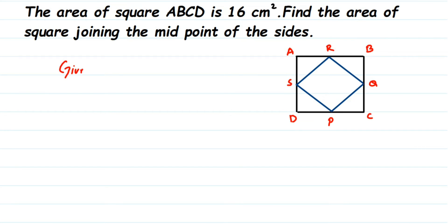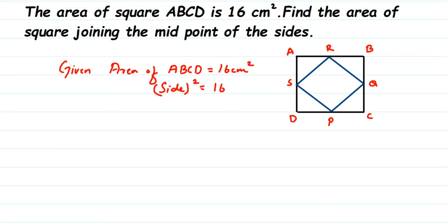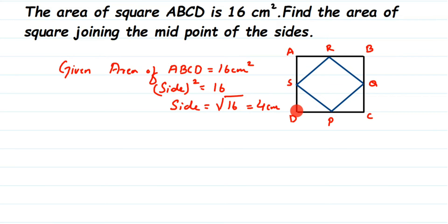They have given the area of square ABCD, which is 16 centimeter square. The formula for area of a square is side times side, or side squared. So side squared equals 16, meaning side equals square root of 16, which is 4 centimeter, since 16 is a perfect square. So each side of the bigger square is 4 centimeter.